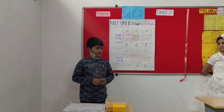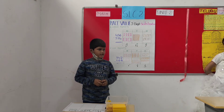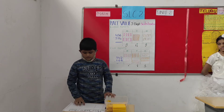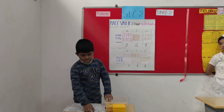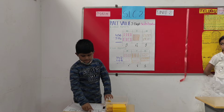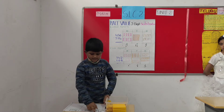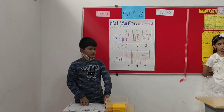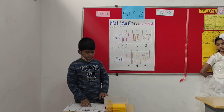We should always take the bigger number first. So, we have to subtract 187 from 354. The bigger number is 354, so I am going to take 354.